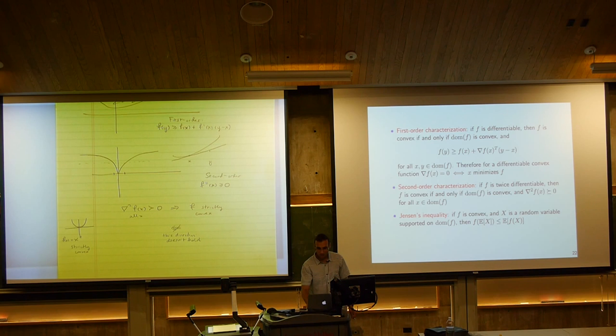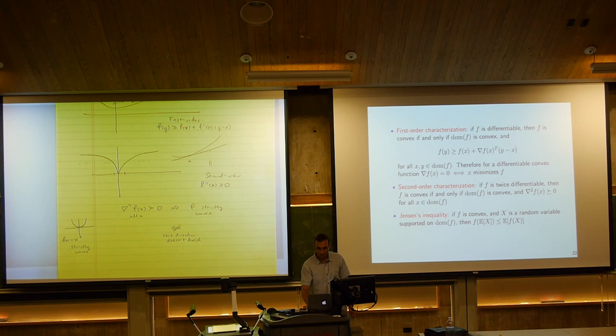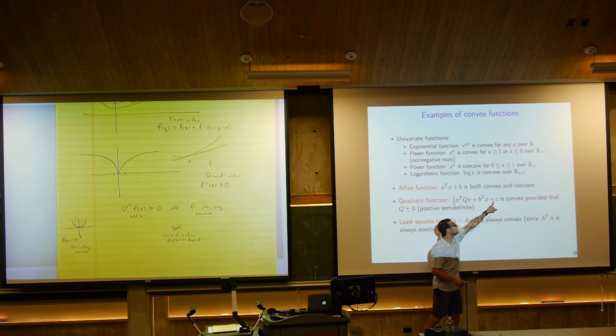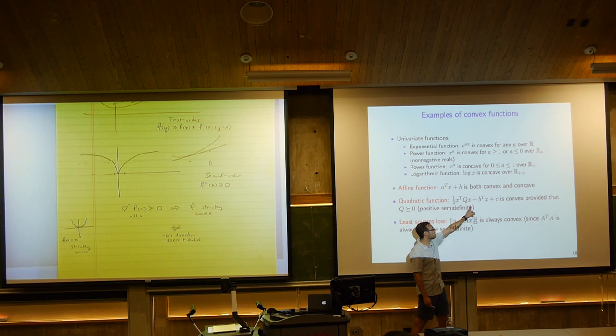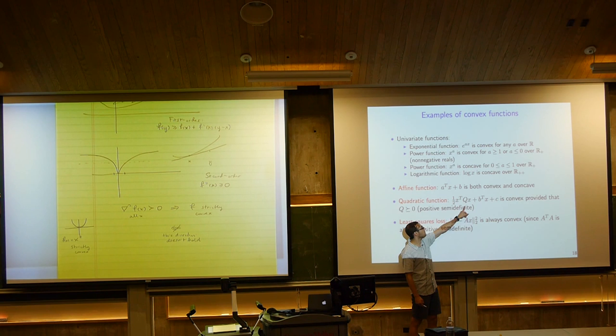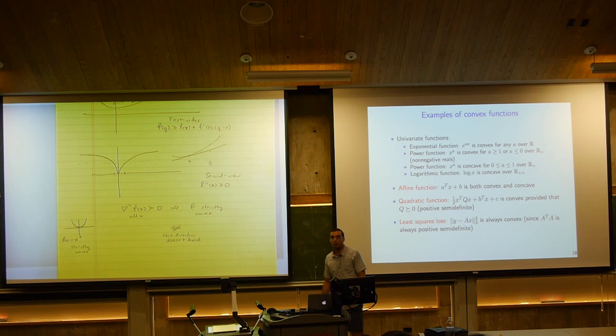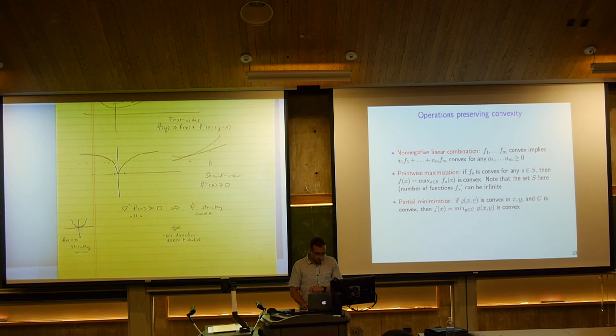We discussed operations that preserve convexity. Non-negative linear combinations of convex functions give a convex function. Pointwise maximum of convex functions is convex. Partial minimization: if a function is convex in two variables, minimizing one variable over a convex set gives a convex function. But you can always maximize partially — more restrictions apply to partial minimization.